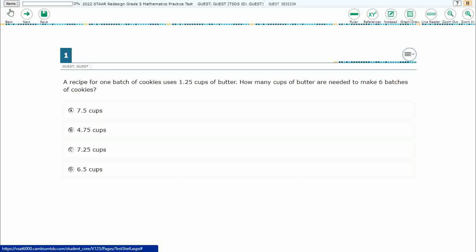So we have a recipe for one batch of cookies for 1.25 or 1 and 25 hundredths cups of butter. How many cups of butter are needed to make six batches of cookies?